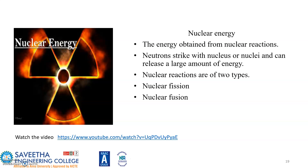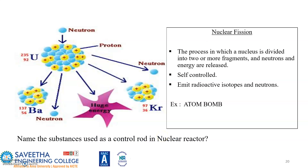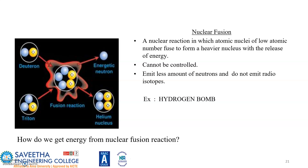Nuclear energy is the energy obtained from nuclear reactions. A neutron strikes a nucleus which releases a large amount of energy, and further nuclear reactions are of two types: nuclear fission and nuclear fusion. For more information, a link is provided. Nuclear fission is when a nucleus is divided into two fragments, releasing neutrons and energy. Those neutrons trigger other nuclei and the process keeps repeating — this is called a chain reaction. A question asks: please name the substances used in control rods and nuclear detectors.